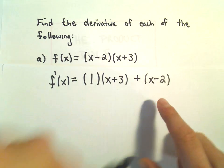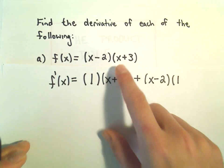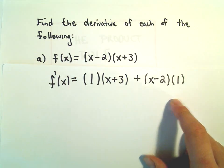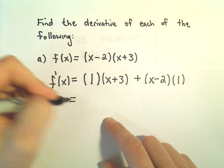Well the derivative, again, the derivative of 1x is just 1, the derivative of +3 is just 0, so that would be our derivative.